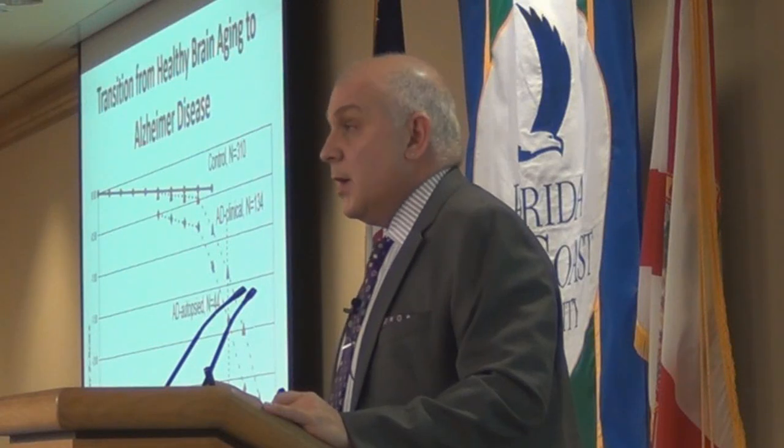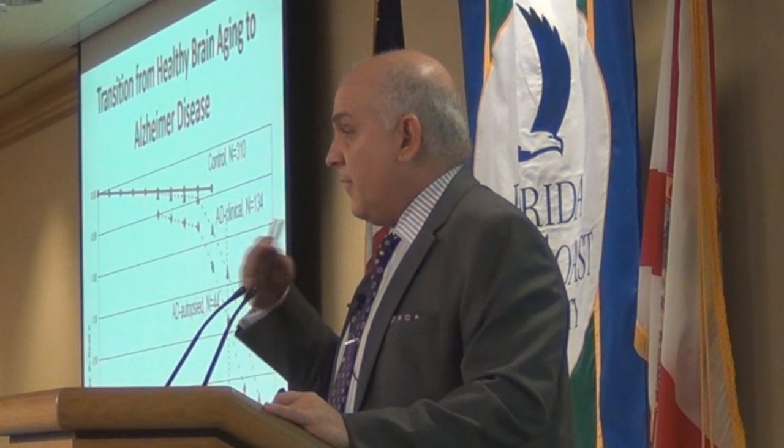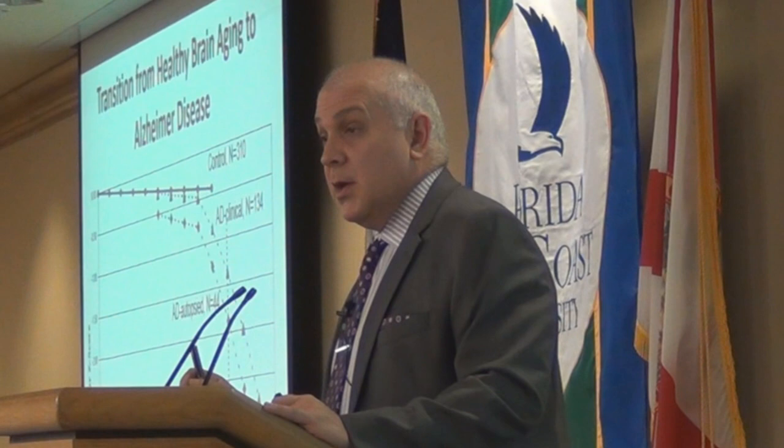Here I'm going to describe the transition from healthy aging to Alzheimer's disease. Let's start with a simple model. We have people we followed for 20 years who were cognitively normal and never developed Alzheimer's disease. We also have people we followed who were cognitively normal but eventually developed Alzheimer's disease, and a large portion of them eventually died and we did an autopsy.